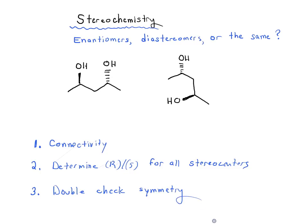Usually we won't use that third step, but it does come into play occasionally, so it's important. Number one is to just double-check the connectivity of each of these molecules. We've got five carbons on the left and five carbons on the right. We've got hydroxyl groups at carbon 2 and carbon 4 on both molecules. So we're not paying attention to stereochemistry here, just connectivity — and they clearly have the same connectivity.